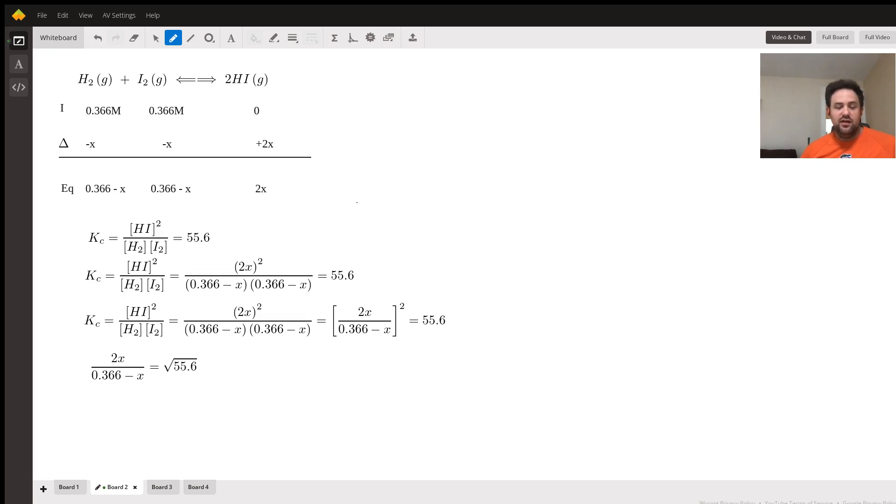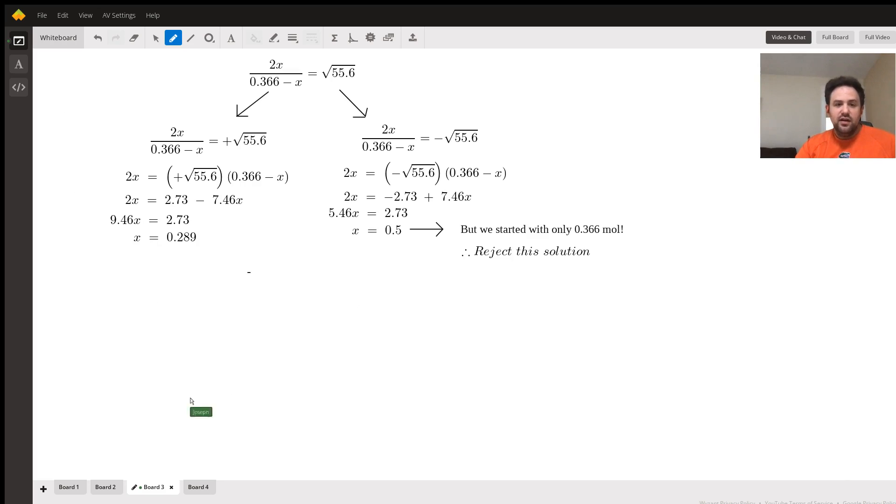By doing it this way, we can avoid the quadratic equation entirely, so this makes our math pretty easy. Keep in mind that the square root of 55.6 is a plus or minus square root of 55.6.